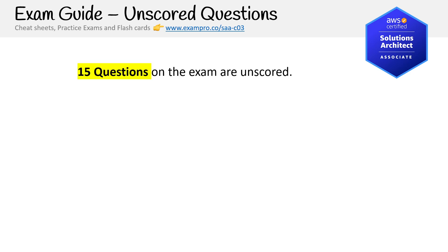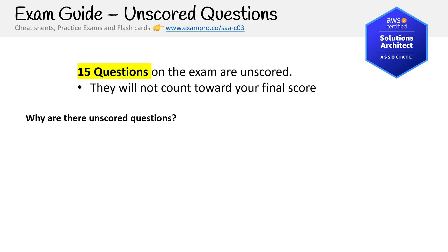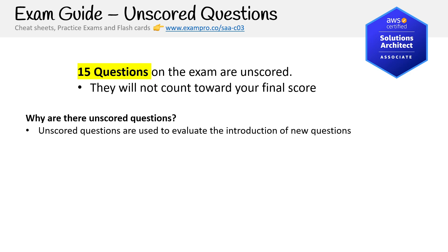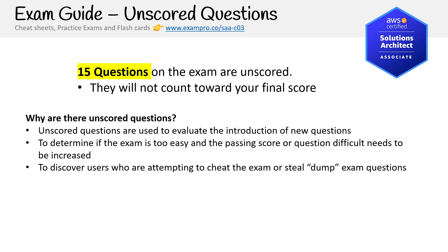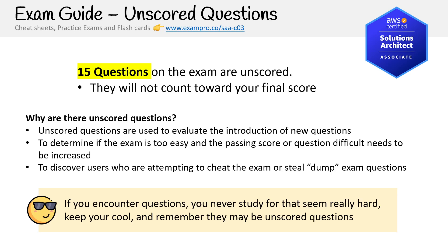There are 15 unscored questions on the exam that will not count towards your final score. Why are they there? They're used to evaluate the introduction of new questions, determine if the exam is too easy and whether the passing score or question difficulty needs to be increased, and for detecting cheaters or people stealing exam dump questions. If a question seems really hard, keep your cool — it may be an unscored question.